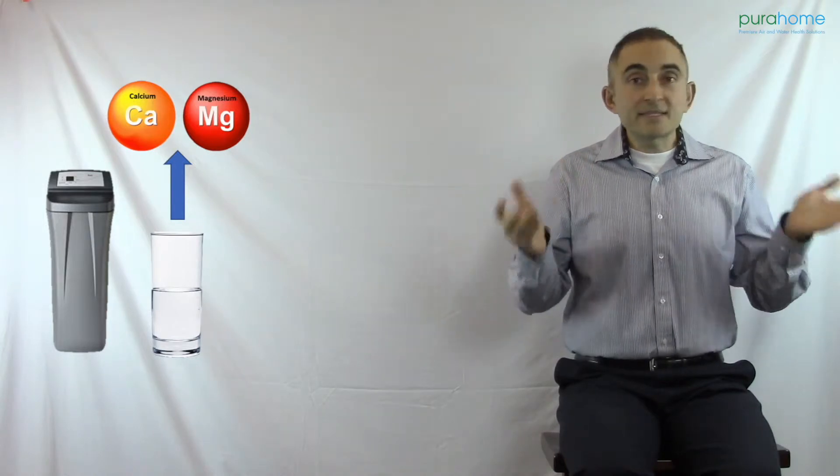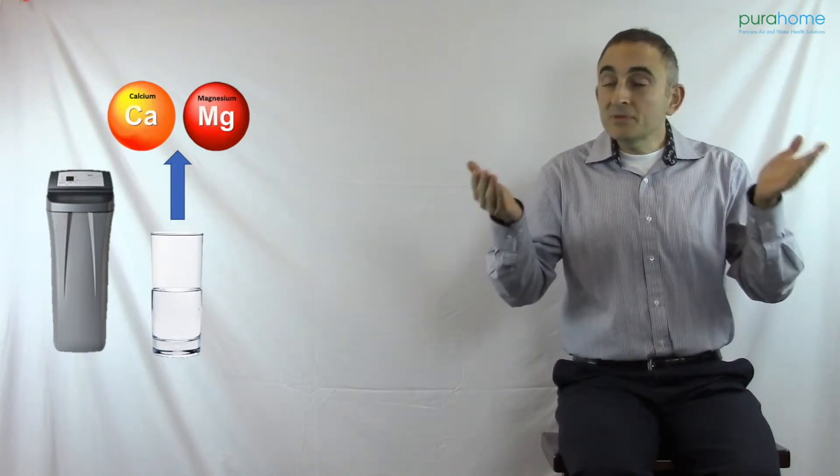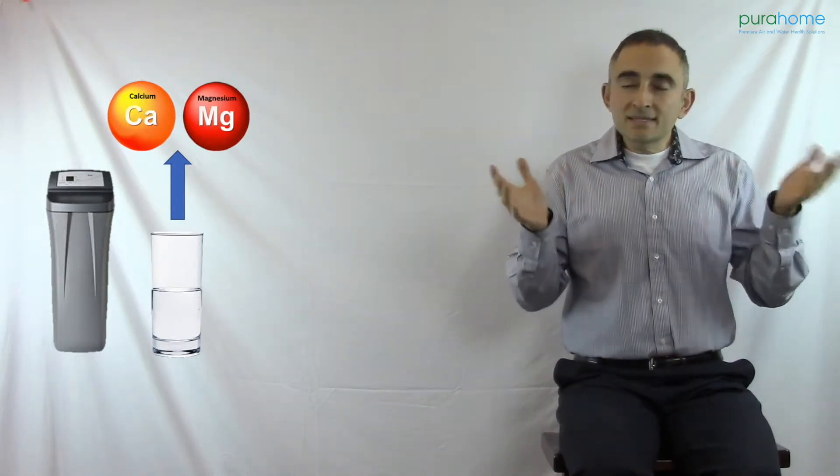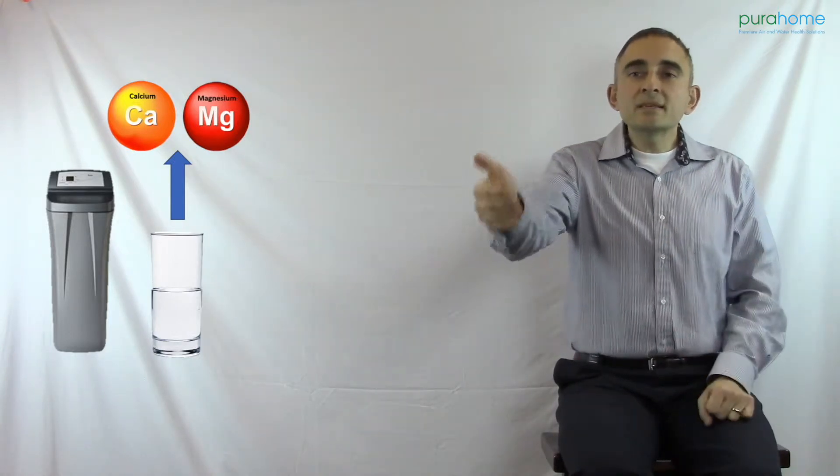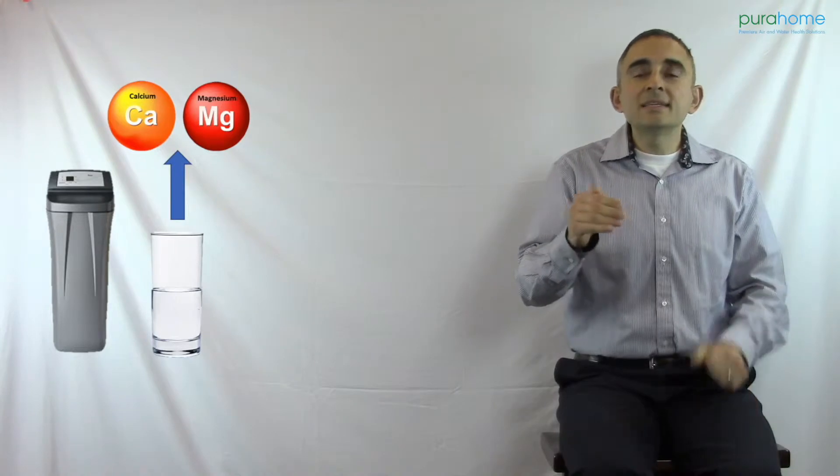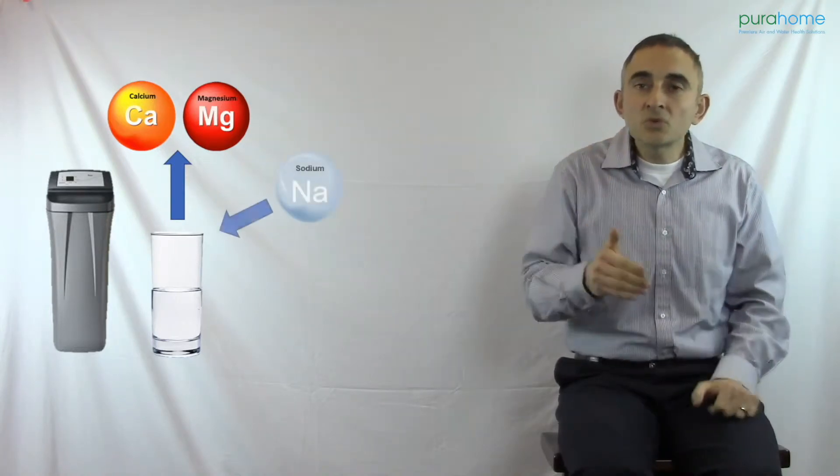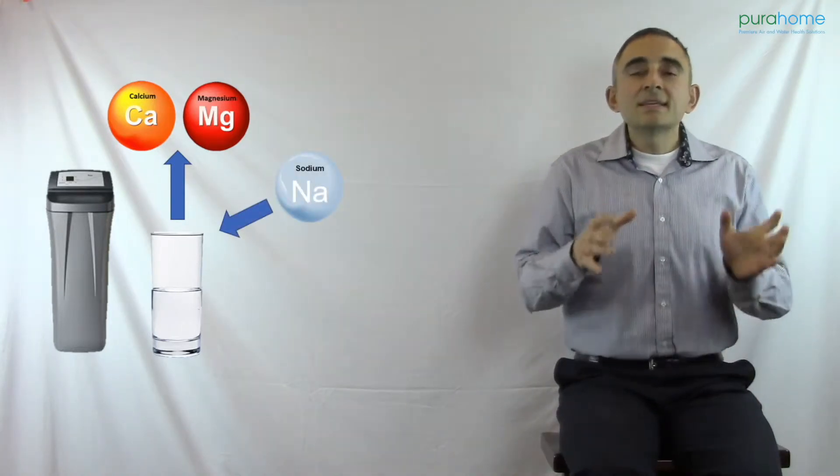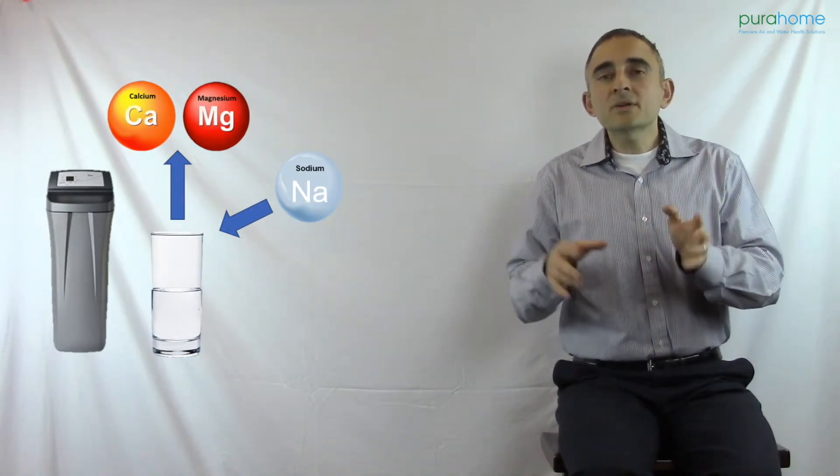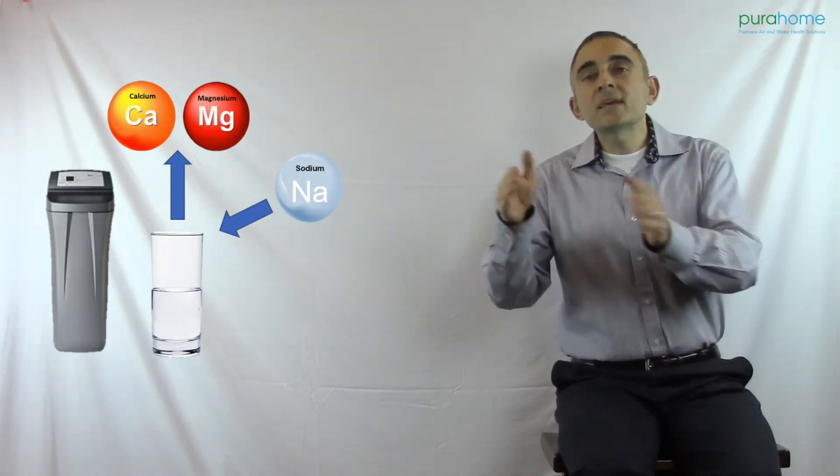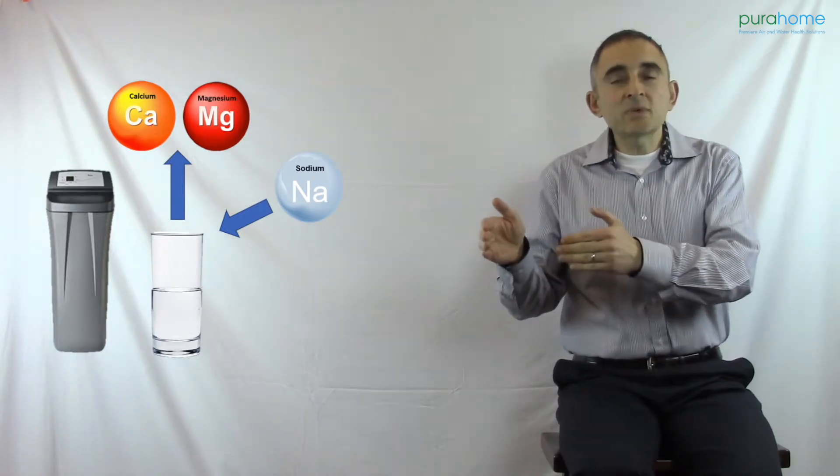A water softener is based on chemistry. The books have to balance. It's not an exchange of coins. It's an exchange of ions. Calcium and magnesium are taken from the water and in exchange for these ions, sodium is put in place. So now the books balance. I still have ions in the water except now it's sodium that's in the water and not calcium and magnesium.